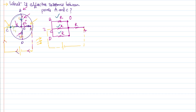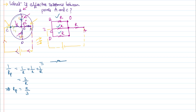When resistors are in parallel, you can draw an equivalent circuit using the formula: 1 by R_parallel equals 1 by R1 plus 1 by R2 plus 1 by R3. But in this problem all are R itself, so that equals 3 by R. That means R_parallel is equal to R by 3.